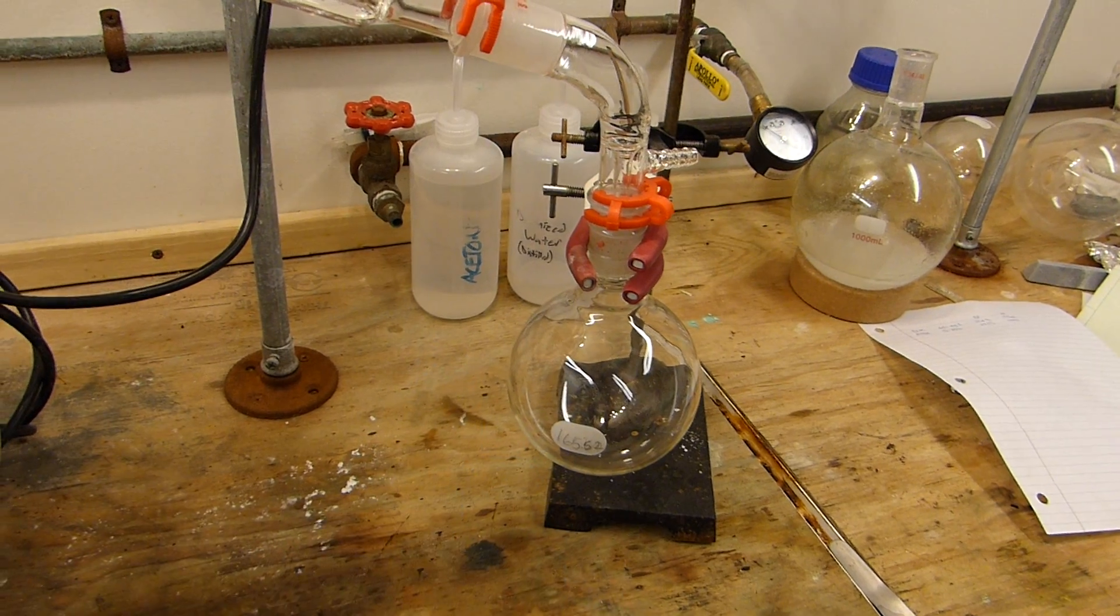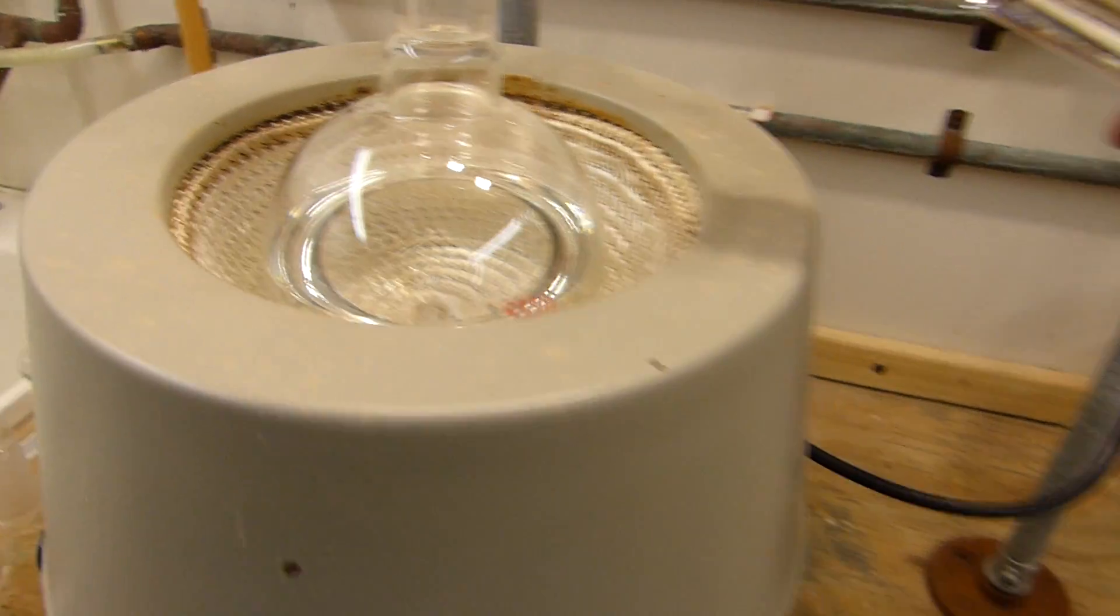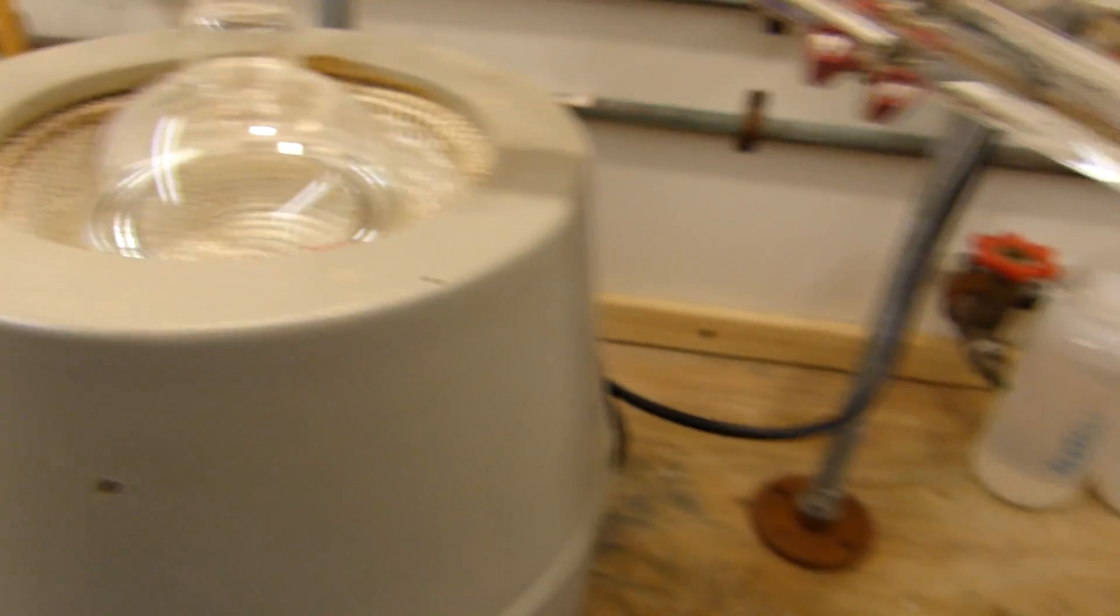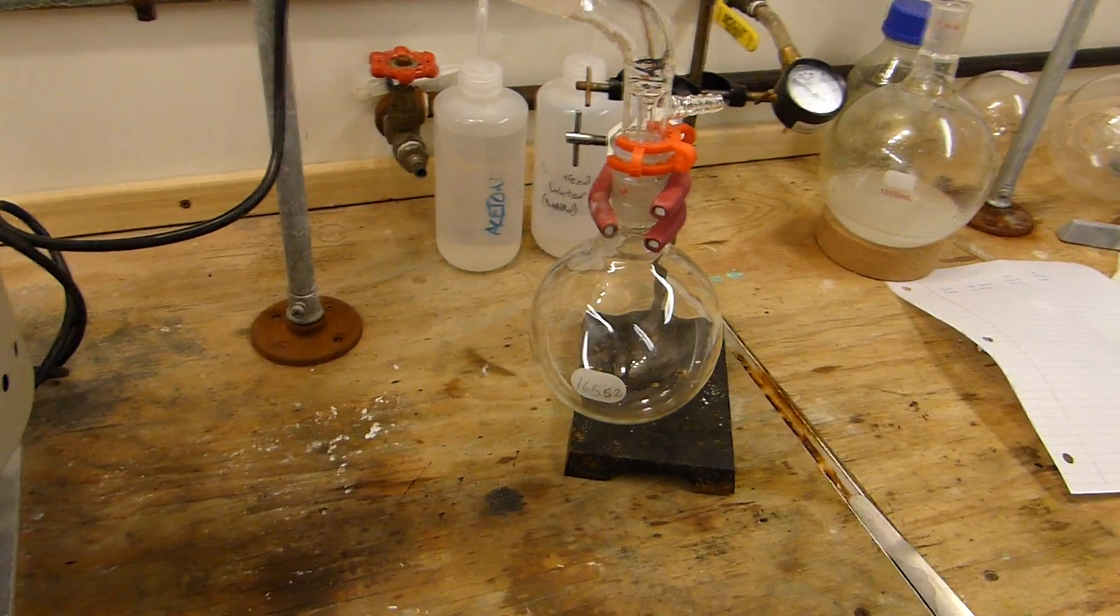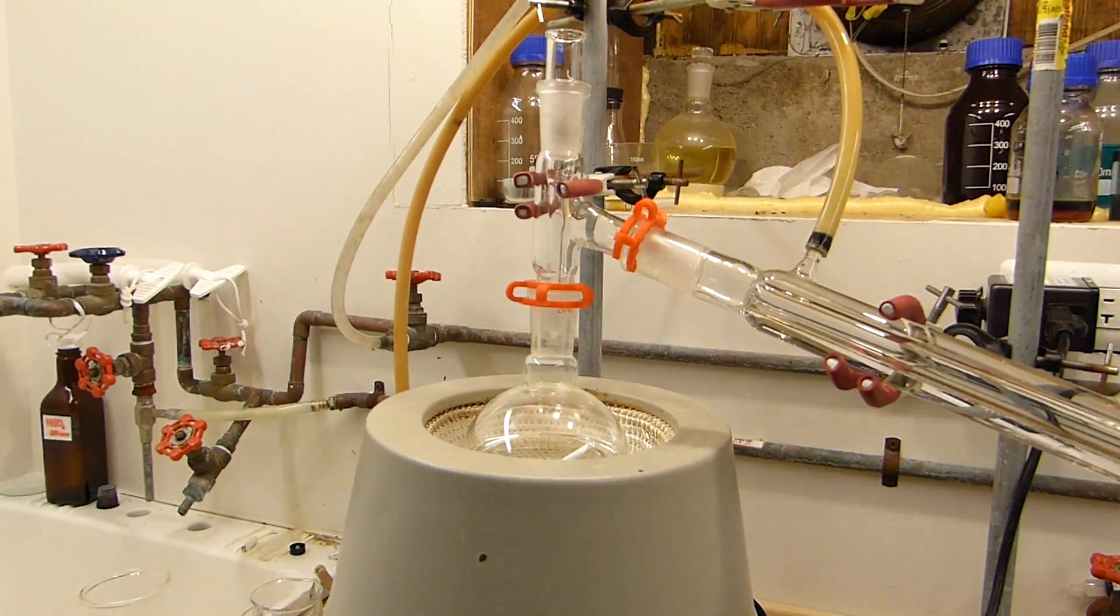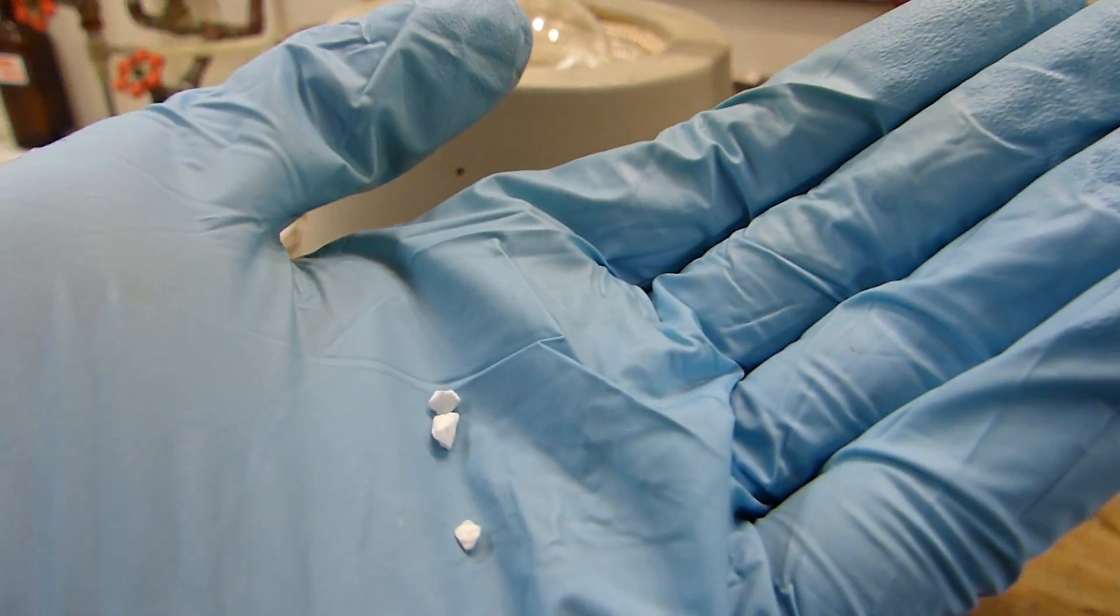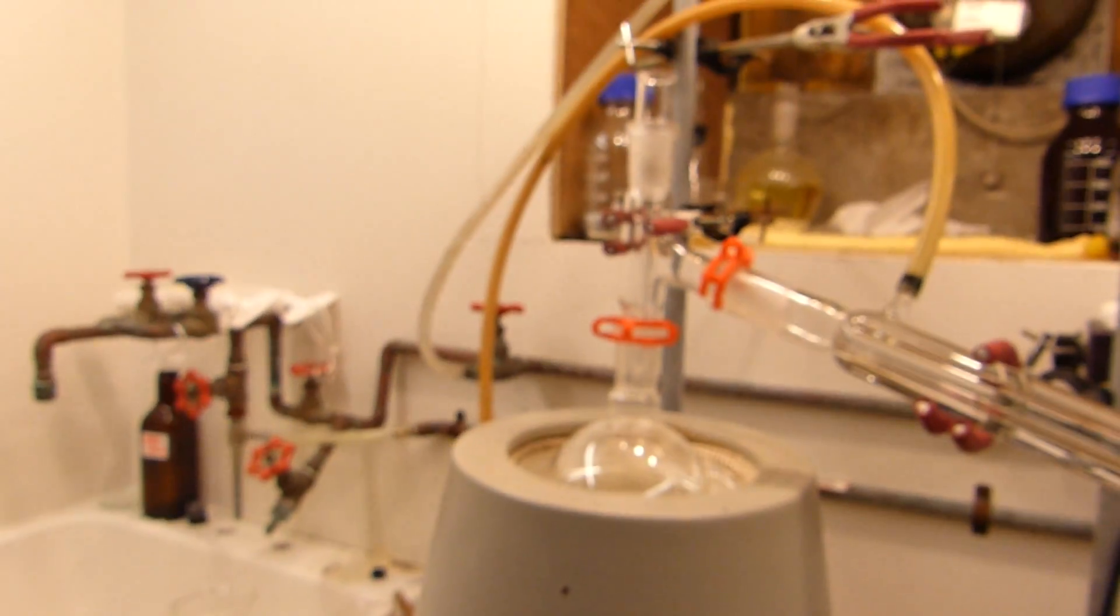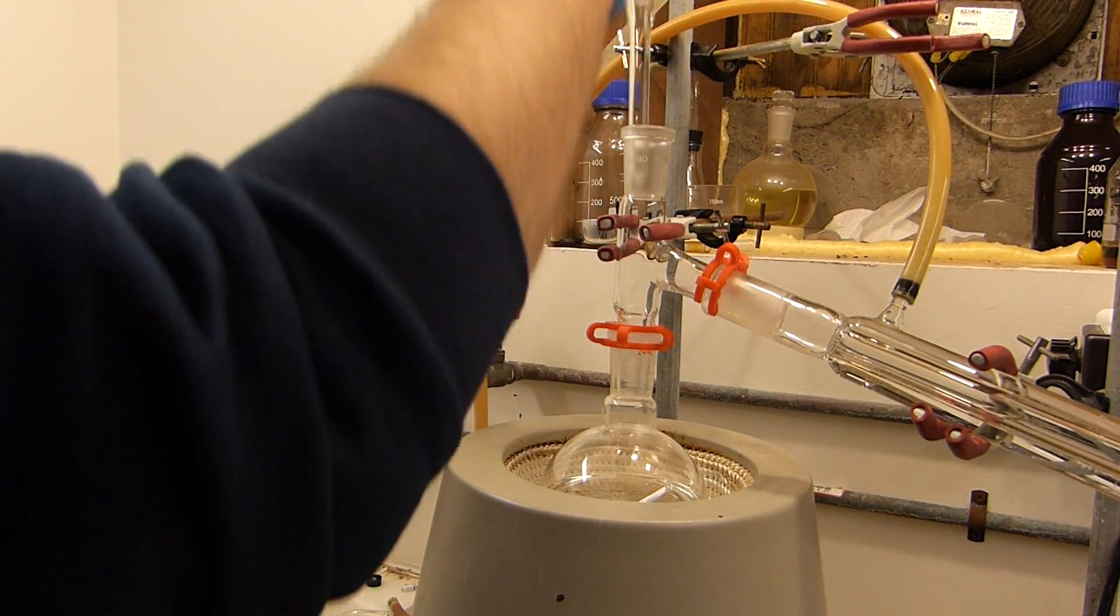And of course I've got a collection flask here which is about the same size as the distillation flask or the boiling flask, just because we're going to distill pretty much all of it over. Oh yes and also I need to add some boiling chips. All right so I'm just going to add some of these little pieces of crushed porcelain. They're boiling chips. Never add these to a hot flask.